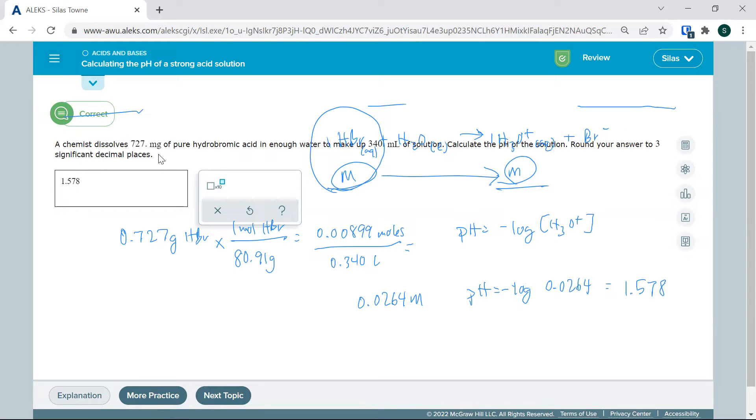So not much of this acid in 340 milliliters. We still have a pretty low pH there, even though that molarity is pretty small. But that's because it's a strong acid.